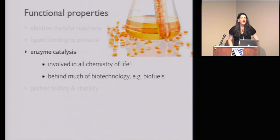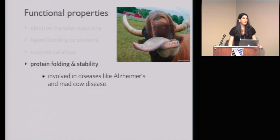Number three, enzyme catalysis. Now what an important process, it's involved in all chemistry of life. If there were no enzymes, there wouldn't be life. Because the chemistry that is involved in life, some of that chemistry would take thousands more time to happen if it wasn't for the presence of enzymes. And it's also behind much of biotechnology interests of today. For example, the production of biofuels and things like that. So a hugely important field. And finally, protein folding and stability. Why is that big?